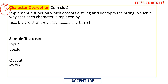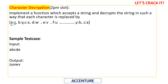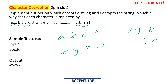The second question is character decryption. We are given an encrypted input string and must return the decrypted output following a reversal pattern: 'a' is replaced by 'z', 'b' by 'y', 'c' by 'x', and so on — 'y' becomes 'b' and 'z' becomes 'a'. Essentially, the alphabet order is reversed: the first letter becomes the last, the second becomes second-to-last, and so on.